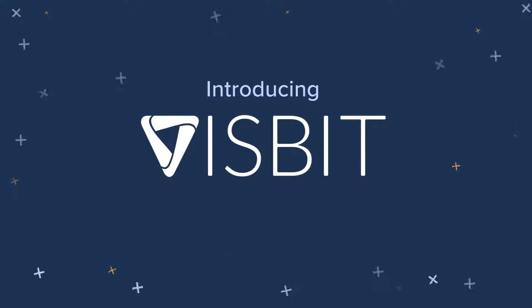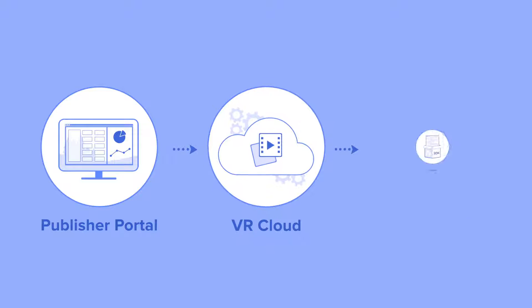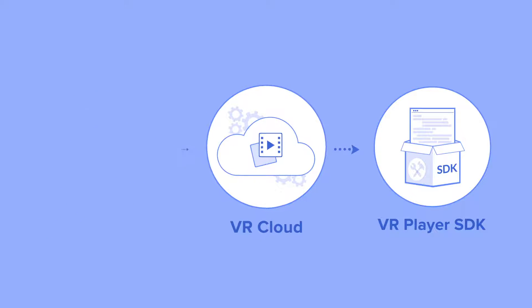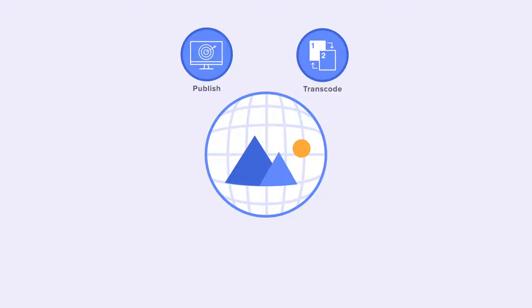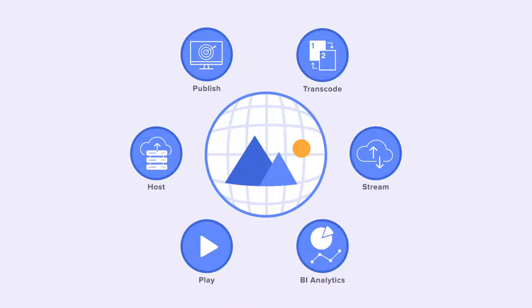Introducing Visbit, the first all-in-one VR streaming service. Visbit helps you add 360-degree videos to your apps quickly and easily. It handles everything from video publishing to transcoding, hosting, streaming, playing, and provides BI analytics.